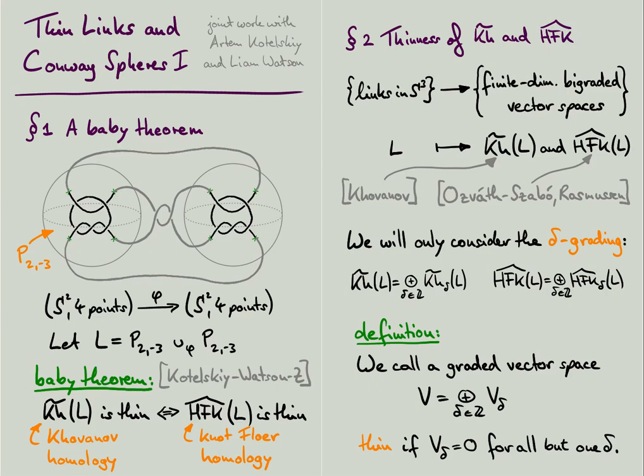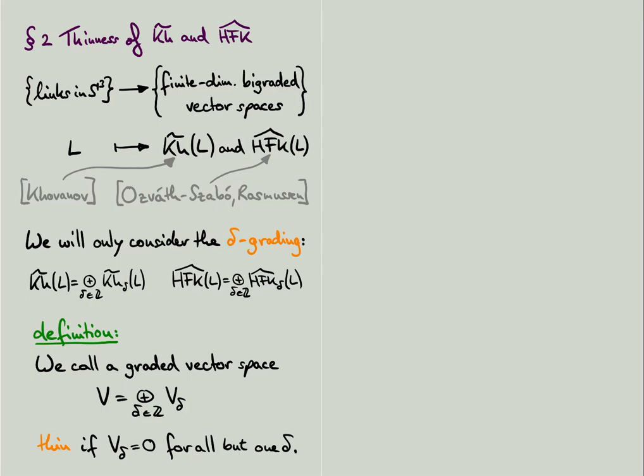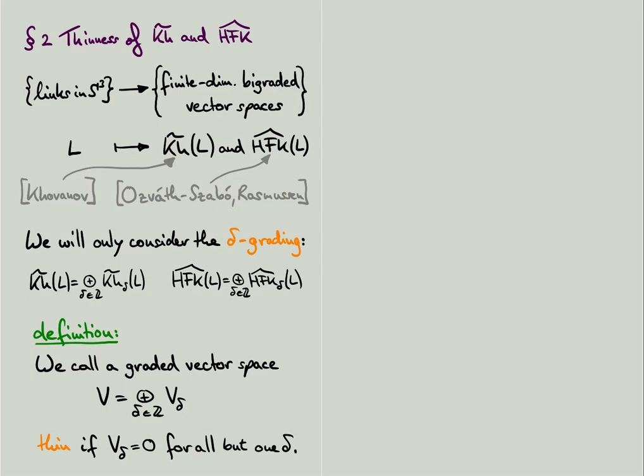On the other side, for knot-Floer homology, it is not even known whether it contains any torsion at all, so it is not clear whether thinness in knot-Floer homology depends on coefficients. We will work over the field of two elements, so let me include this in the statement. We show that for any link obtained by gluing two copies of the 2-3 pretzel tangles together, the reduced Khovanov homology with Z-mod-2 coefficients is thin if and only if the knot-Floer homology with Z-mod-2 coefficients is thin.